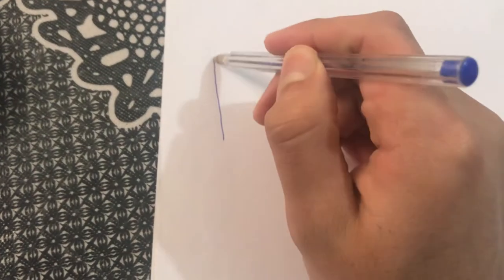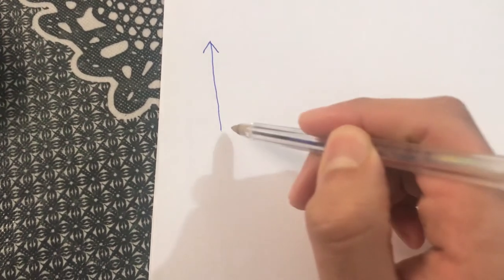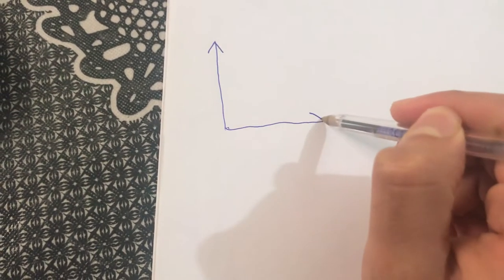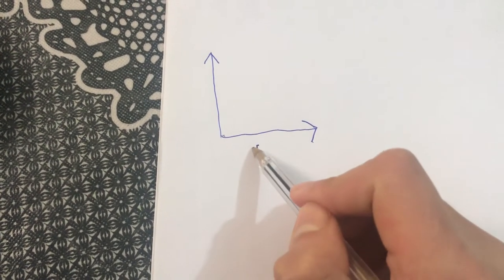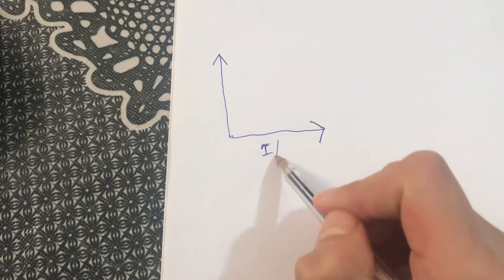We start out drawing an arrow on the top and an arrow on the right. We write the particular sound that we're going to show under the spectrogram between slashes.